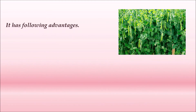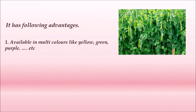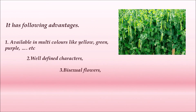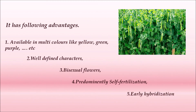The following advantages made Mendel choose the pea plant. Firstly, it is available in multiple colors like yellow, green, and purple. It has well-defined characters, it is a bisexual plant with bisexual flowers, it shows self-fertilization predominantly, and it has an early hybridization process.